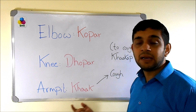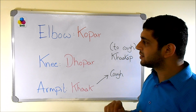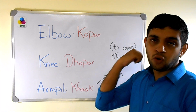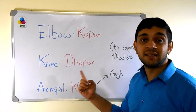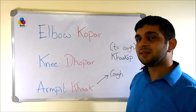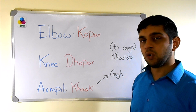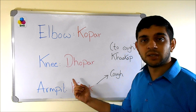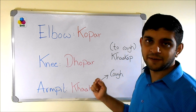That is why I grouped elbow and knee together — koper and dhopar. For 'dhopar', there is a nasal quality to the 'dhau' sound — it will not be 'dho', it will be 'dhau'. So: dhopar and koper, dhopar.